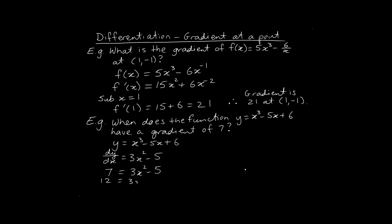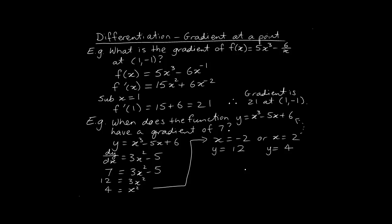So 12 must equal 3x², which means x² = 4, giving two answers: x = -2 or x = 2. When x = -2, substituting back into the original function y = 12. When x = 2, substituting into the original function y = 4. Therefore the function has a gradient of 7 at the points (-2, 12) and (2, 4).